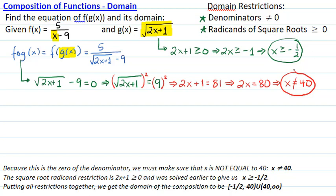To check the restriction of the radicand, we will set 2x+1 ≥ 0. But this was already a restriction that was solved earlier, so we get again that x ≥ -1/2.